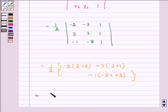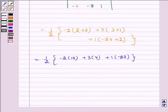Which is equal to half into minus 2 into 10, plus 3 into 4, plus 1 into minus 22, which is equal to half into minus 20 plus 12 minus 22.